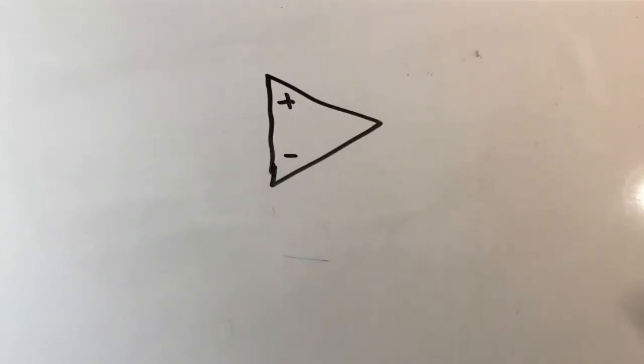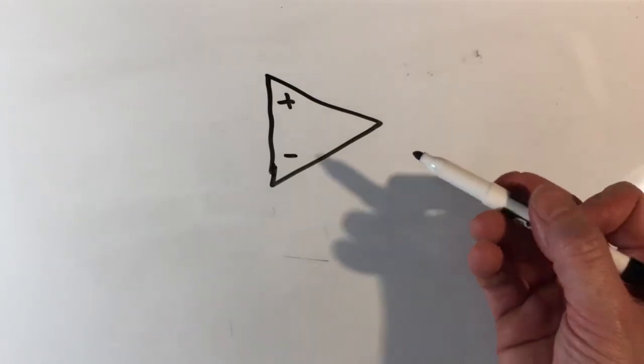In this discussion, we're going to qualitatively talk about what happens when you add negative feedback to an amplifier. So in this case, we have an operational amplifier, an op amp.